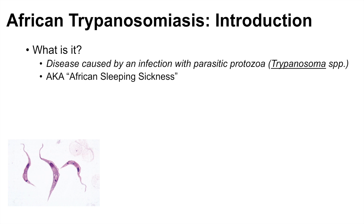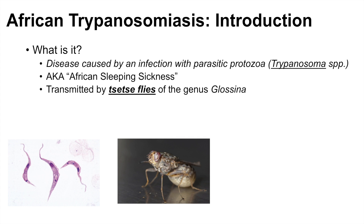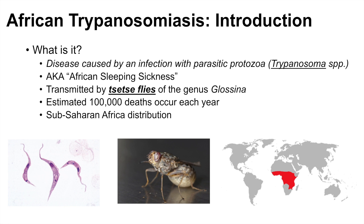African trypanosomiasis is also known as African sleeping sickness, and we'll talk about why that is later on in the lesson. The Trypanosoma protozoa that causes African trypanosomiasis is transmitted by the tsetse flies of the genus Glossina. Here's an image of a tsetse fly. It is estimated that about 100,000 deaths occur each year due to African trypanosomiasis, and the disease is distributed in the sub-Saharan African region. Here's a map of the area where African trypanosomiasis occurs.